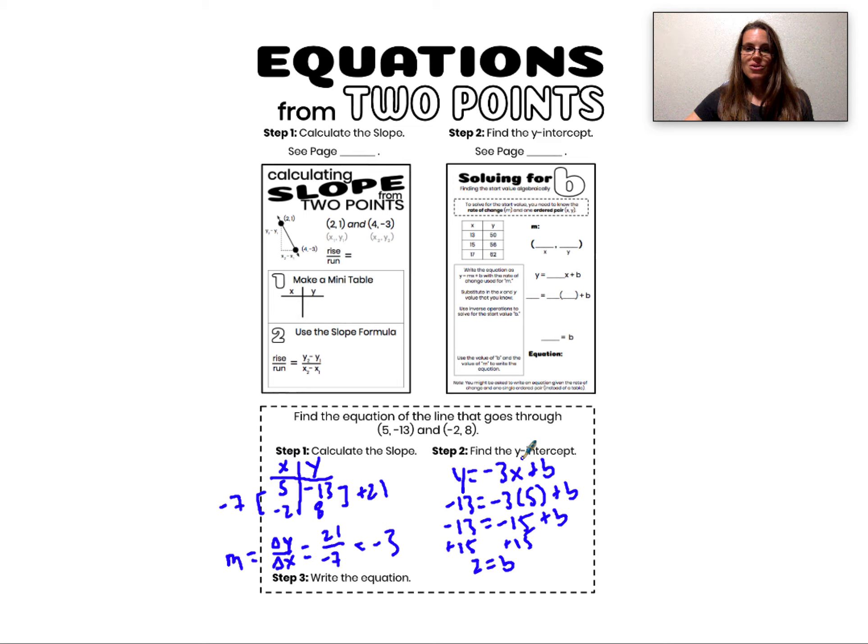Now I know everything I need to know to write my equation. I know the slope and I know the y-intercept slash start value. It's really common on assessments for students to stop here and to never put these two pieces of information together. So after you found the slope, after you found the y-intercept, go ahead and write your equation. Y equals -3x plus my start value of 2.